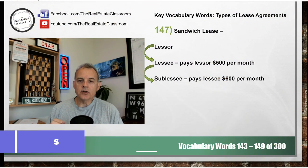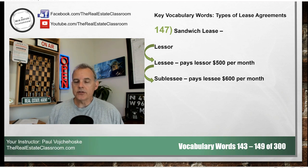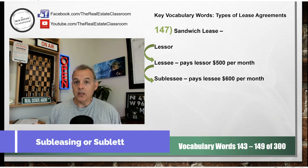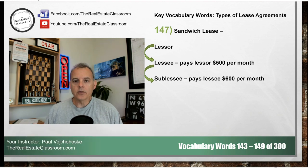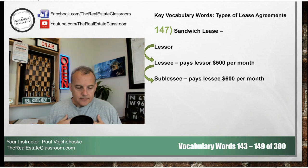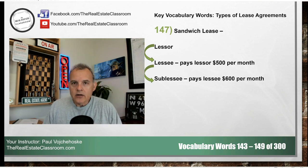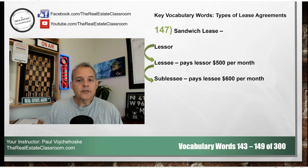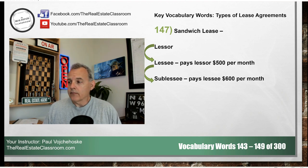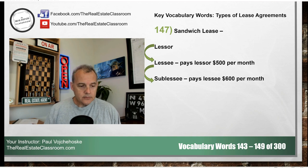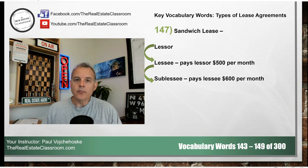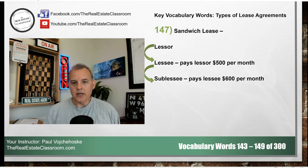Number 147 is called a sandwich lease, which is very common in situations involving sub-leasing or sub-letting. The lessor is the landlord who owns the property. The landlord leases the property out to me — I am the tenant or lessee. I pay the landlord $500 a month, but my lease agreement does not prohibit me from sub-leasing the property. So I move out and rent the property to you — you are the sub-lessee, I am the lessee, and the owner is the lessor.